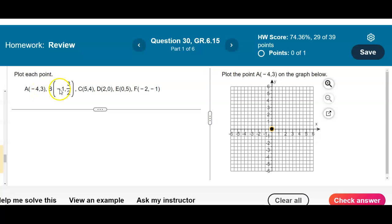And then the second ordered pair is the y value on the y-axis. If it's positive, you go up. If it's negative, you go down.